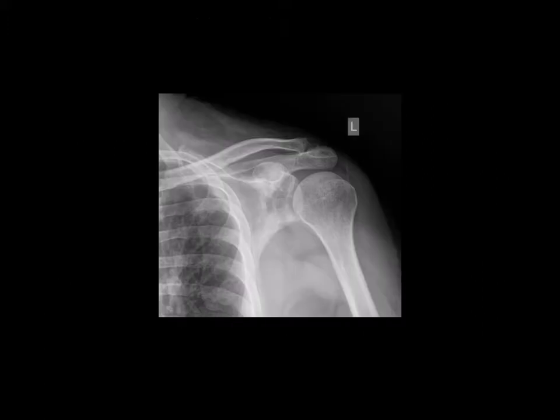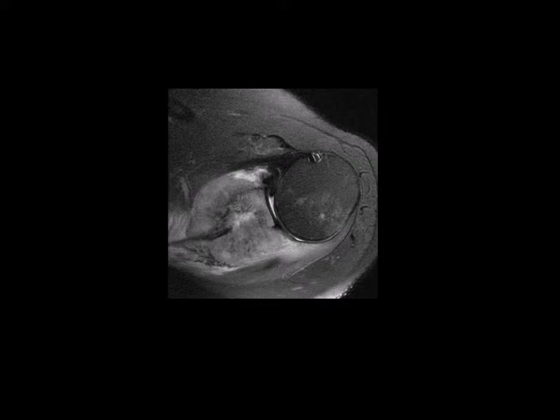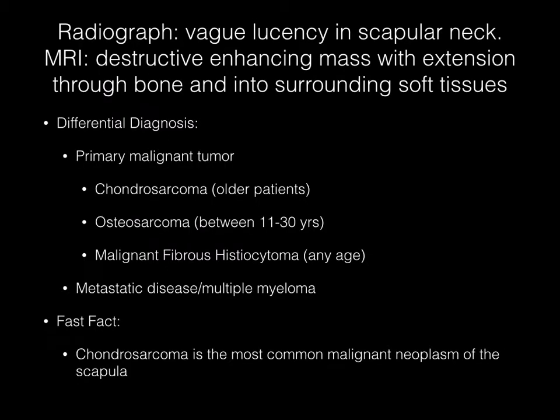Now pause your media player. The radiograph of the shoulder demonstrates vague lucency in the scapular neck. The corresponding MR image reveals a destructive enhancing mass with extension through bone and into the surrounding soft tissues. The differential diagnosis should include a primary malignant tumor such as chondrosarcoma in older patients, osteosarcoma in patients between the ages of 11 and 30, and malignant fibrous histiocytoma in patients of any age. Metastatic disease and multiple myeloma should generally also be included.